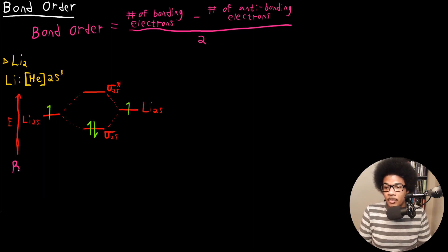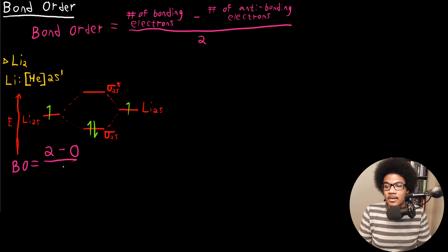Let's calculate the bond order. We have two electrons in the sigma 2s and none in the sigma star 2s — two bonding electrons and no antibonding electrons. Dividing by two gives us a bond order of one, which is exactly the same as we got for H2. So Li2 has a similar bond strength to H2.